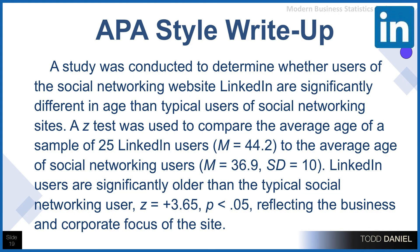Now we can write up our findings in APA style. A study was conducted to determine whether users of the social networking site LinkedIn are significantly different in age than typical users of social networking sites. A z-test was used to compare the average age of a sample of 25 LinkedIn users, with a mean of 44.2, to the average age of social networking users, a mean of 36.9, standard deviation of 10. LinkedIn users are significantly older than the typical social networking user, z = +3.65, p < .05, reflecting the business and corporate focus of the site. So that is how we would do a one-sample z-test, both by hand or by using an Excel spreadsheet.